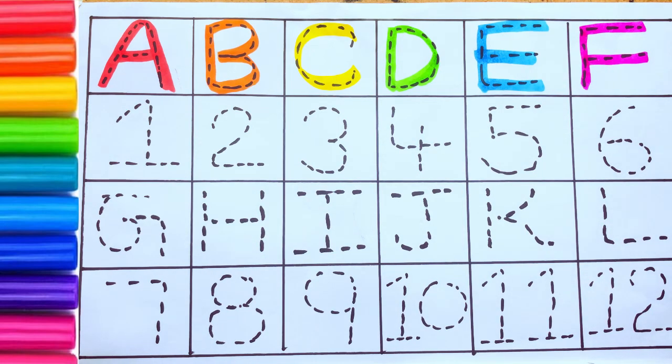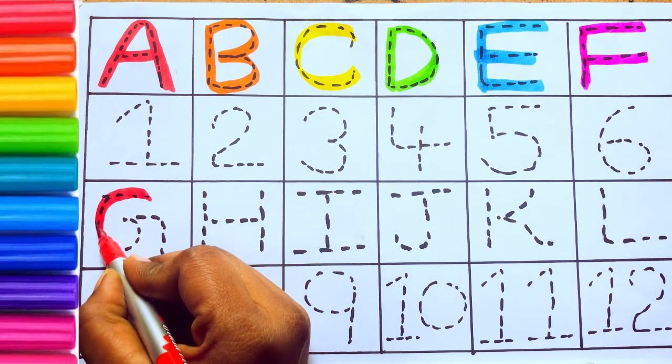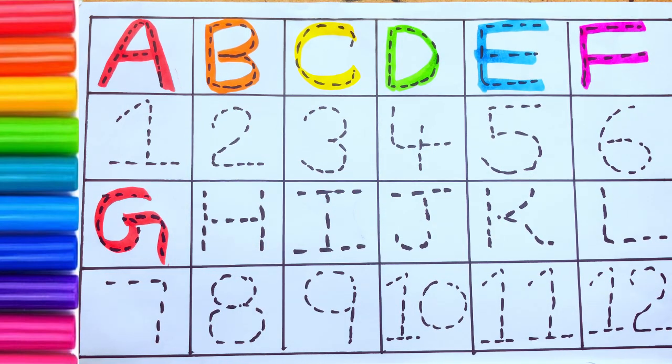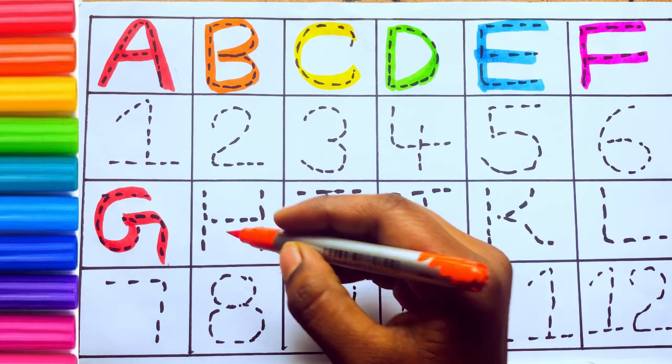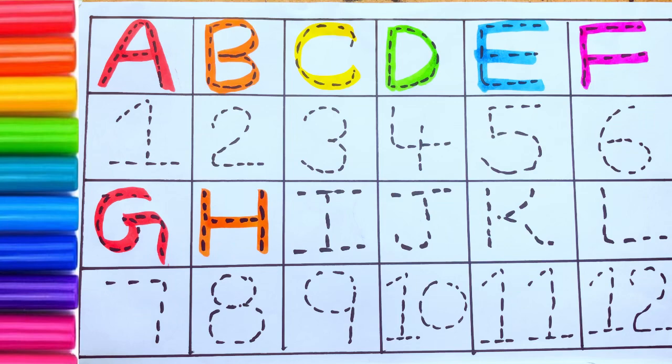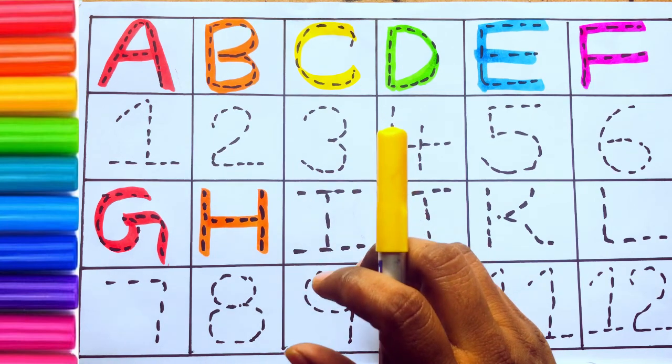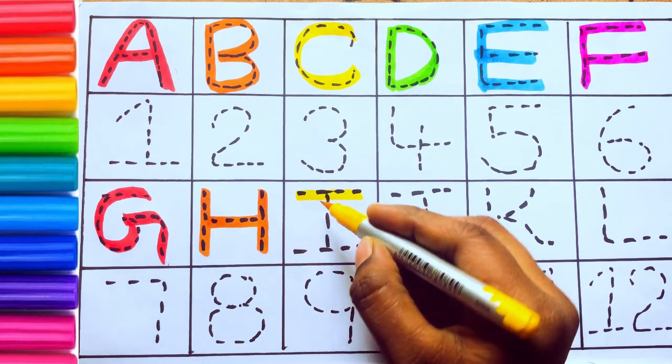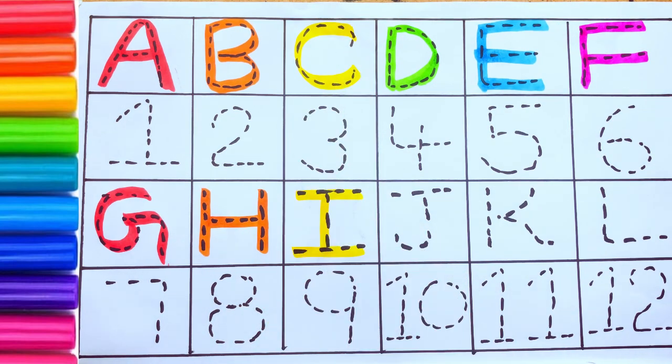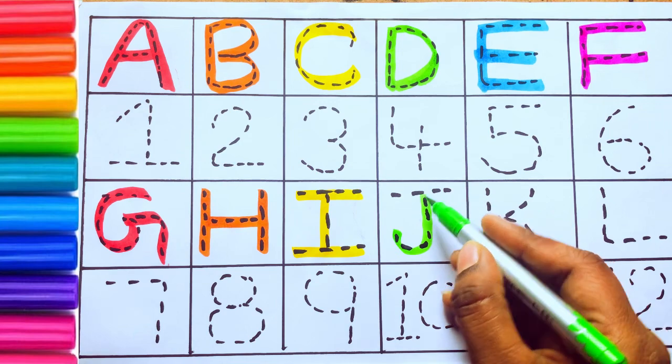Next, red color. G - G for gold. Orange color. H - H for hair. Yellow color. I - I for ink. Black green color. J - J for...